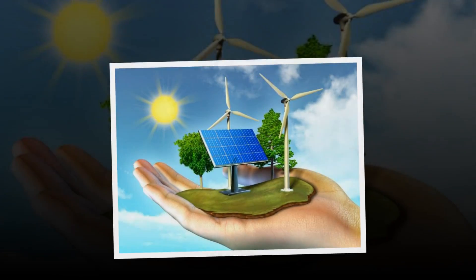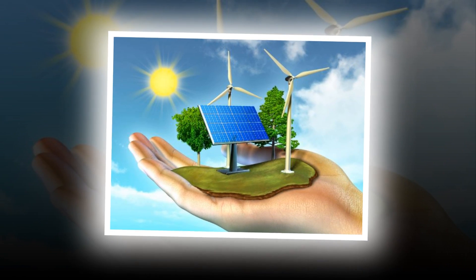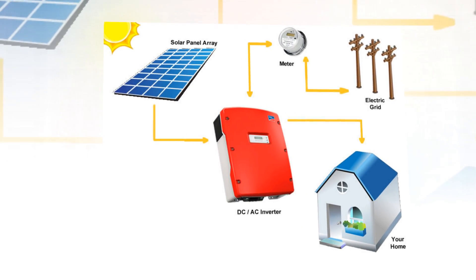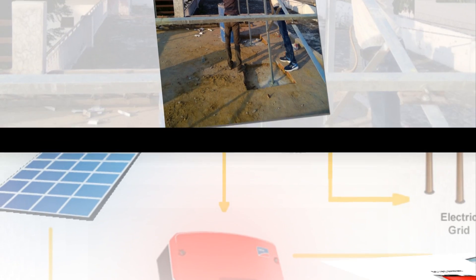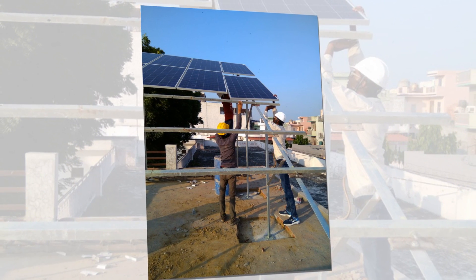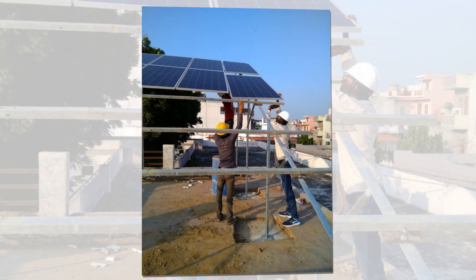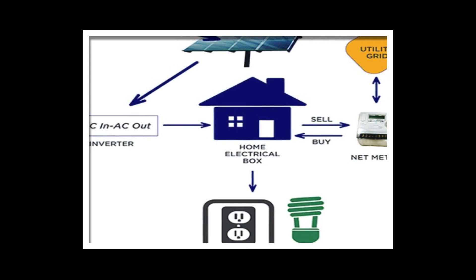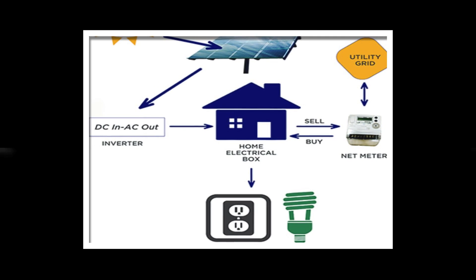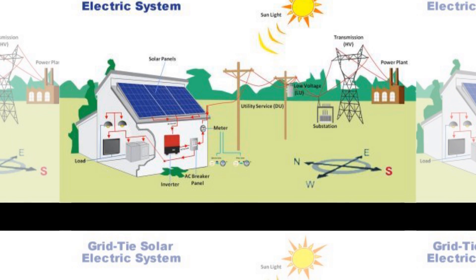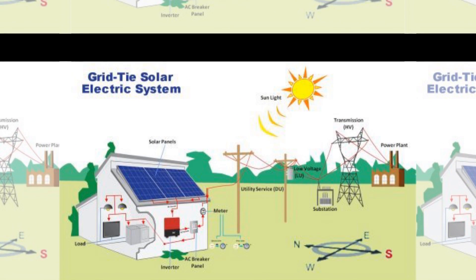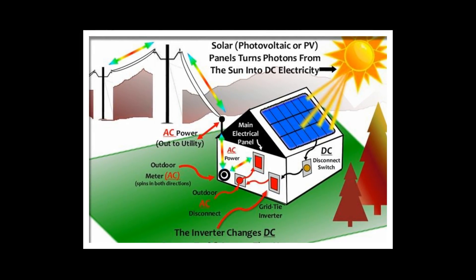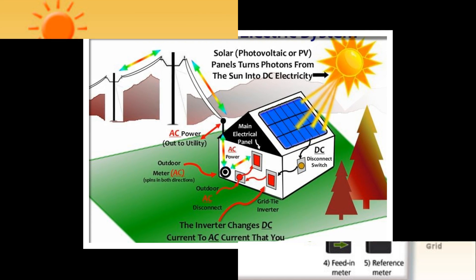Before we get into depth about what is the difference between on-grid and off-grid solar systems, we must first understand how solar panels work. Solar modules or solar photovoltaic PV modules actually work by absorbing sunlight with photovoltaic cells, generating direct current electricity and then converting it to usable alternating current electricity with the help of smart solar inverter technology. AC energy or electricity then flows through the home's electrical panel via array junction boxes and distribution junction boxes for further distribution to the load accordingly.